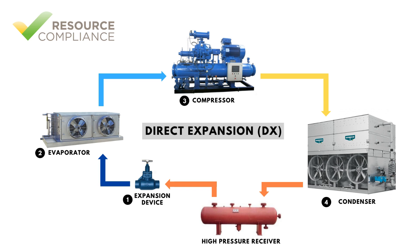Theoretically, a vapor compression system does not require a high-pressure receiver, but due to fluctuations in load and changes in ambient temperature, a receiver provides storage for refrigerant not being used at any given moment. The high-pressure liquid from the receiver is then piped to the expansion device, where we started our process.